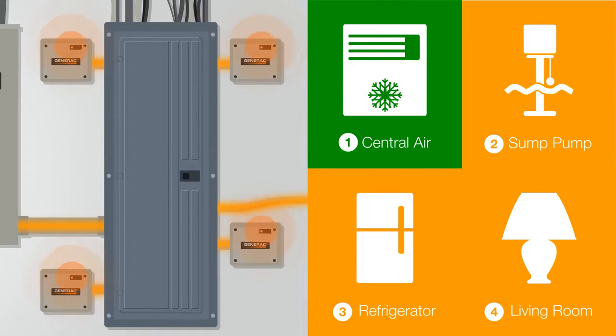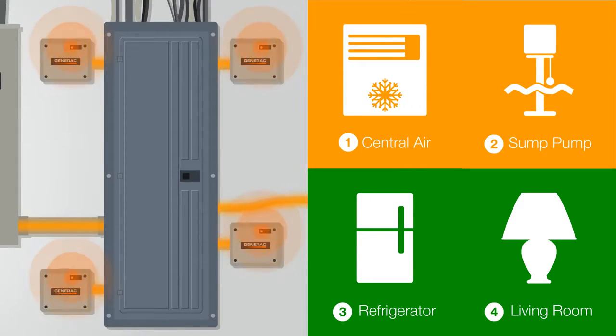It will provide electricity to the highest priority circuits as selected by the homeowner, and once that demand is taken care of, it will then provide power to the lower priority appliances as well, automatically.